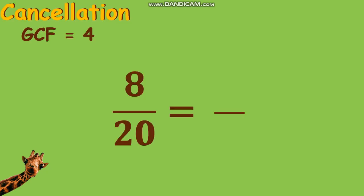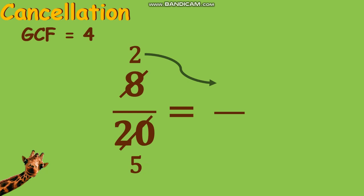And lastly is the cancellation method, where we still use the division of their common factors by cancelling the numerator and the denominator. Let us try 8 twentieths through cancellation. First, find the common factor for both 8 and 20, which is 4. Next, divide it with the numerator and the denominator. Cancel: 8 divided by 4 is 2, and cancel: 20 divided by 4 is 5. There are no more common factors for both 2 and 5, so we can now identify the numerator as 2 and the denominator as 5. Using the cancellation method, changing 8 twentieths to the lowest term gives you an answer of 2 fifths.